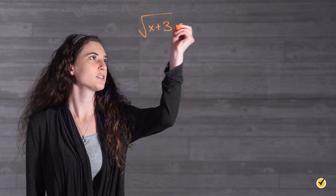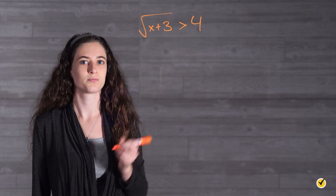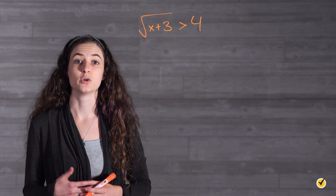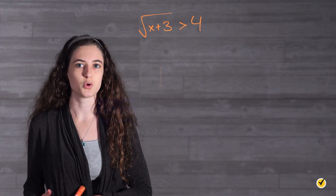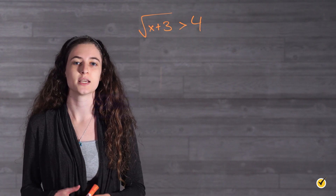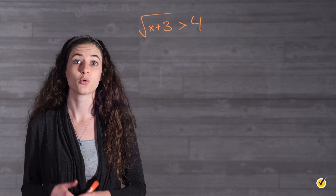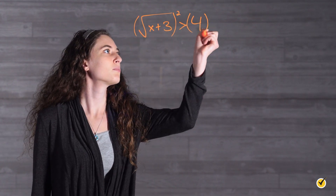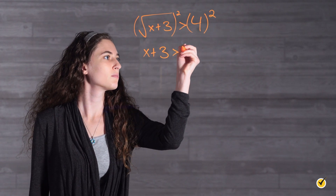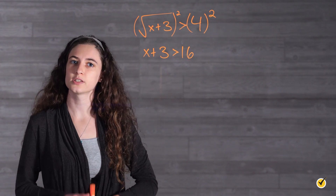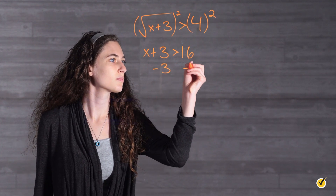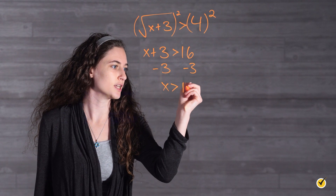The square root of x plus 3 is greater than 4. First, we want to solve this inequality for x normally. We do this by following the same steps we would as if we were solving an equation instead of an inequality. We're going to start by squaring both sides, and then we're going to subtract 3 from both sides. This gives us x is greater than 13.